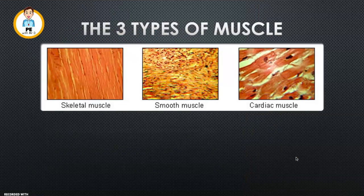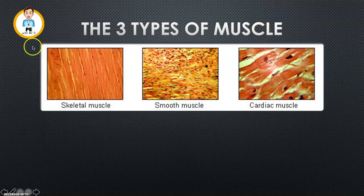So to get us started, there are three types of muscle. Number one: skeletal muscle. Number two: smooth muscle. Number three: cardiac muscle.